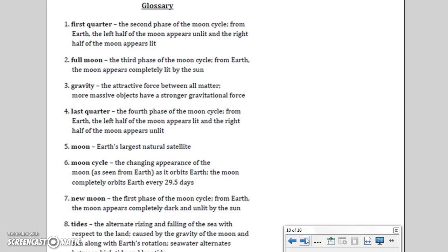Glossary. First quarter: the second phase of the moon cycle. From Earth, the left half of the moon appears unlit and the right half of the moon appears lit. Full moon: the third phase of the moon cycle. From Earth, the moon appears completely lit by the sun.